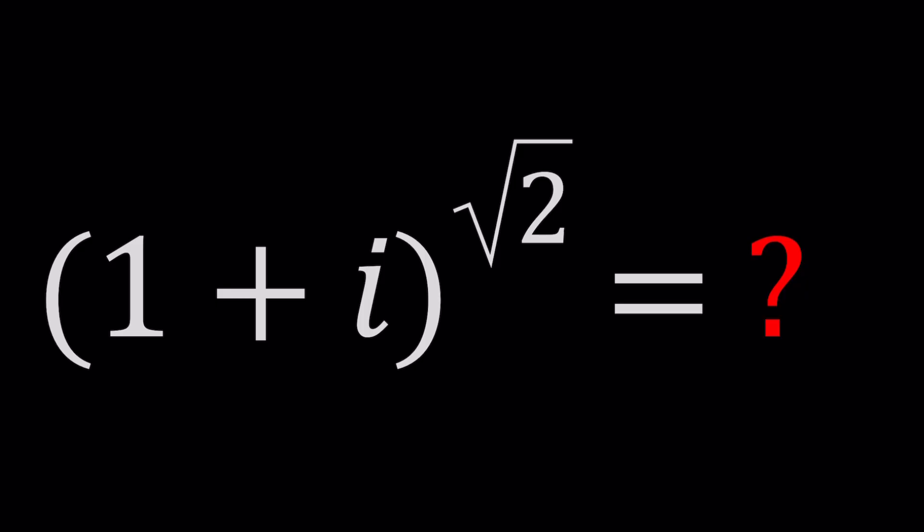Why do I call it interesting? Because we have a complex number at the base and at the exponent we have an irrational number. So we're raising a complex number to an irrational power. How irrational can you get, right? Or how complex you can get.